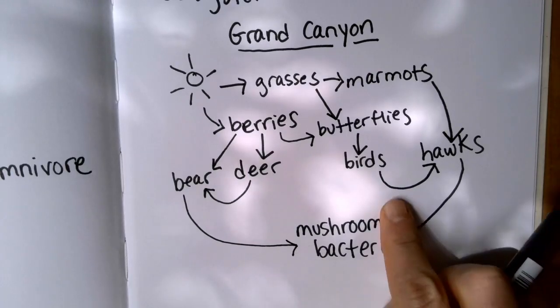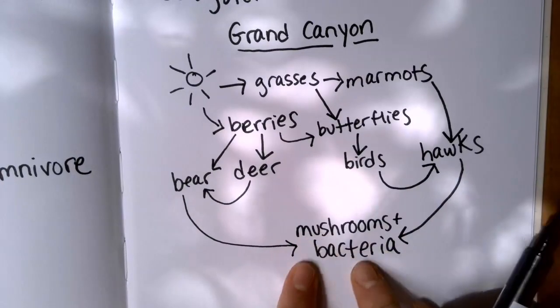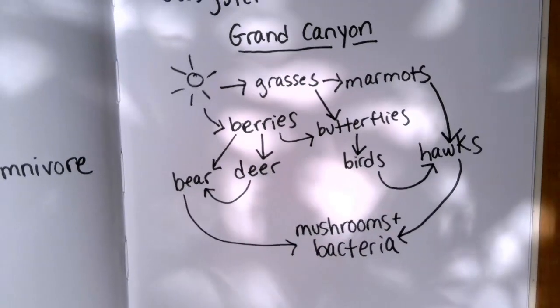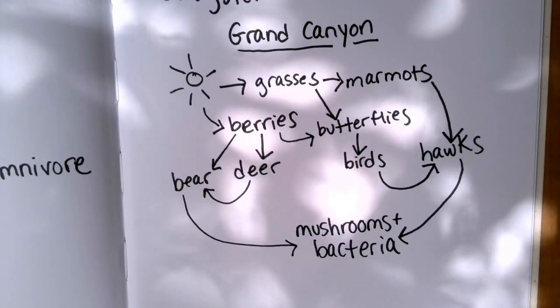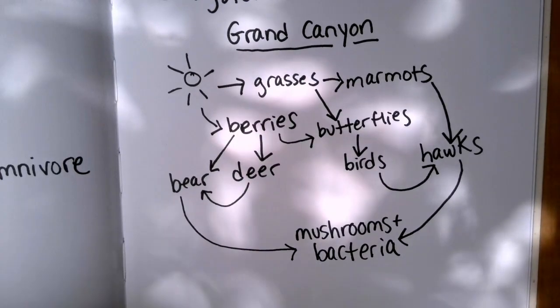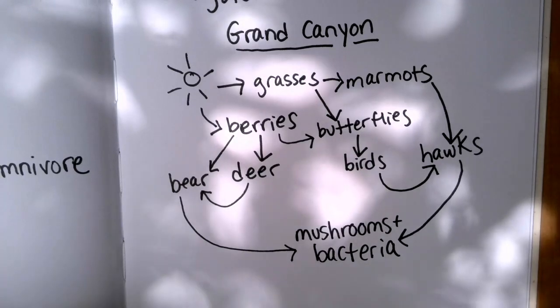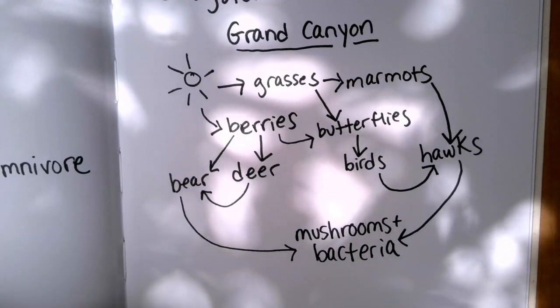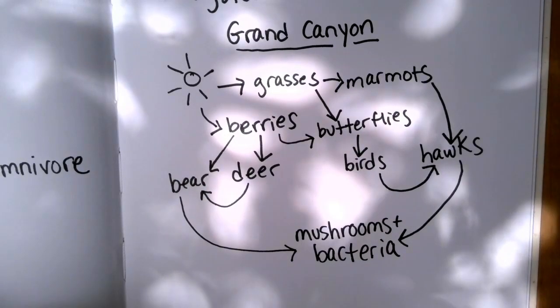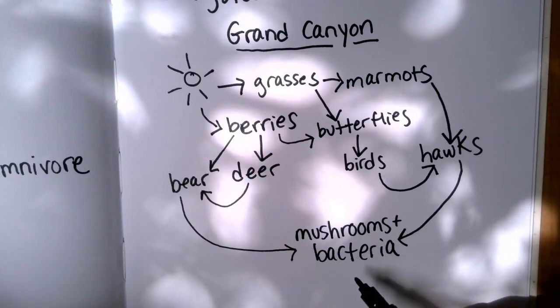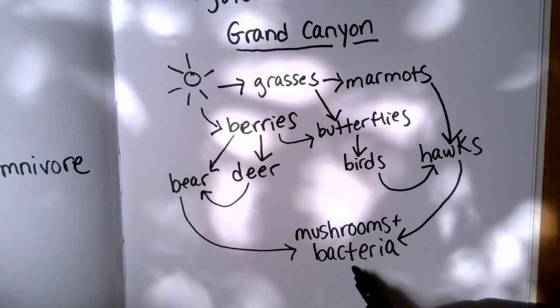All right, y'all. This is our food web. If you wanted a challenge or to add even more detail, and I'm going to say this is optional because if you Google food web, you won't usually see this on Google images. But if you wanted to show some more detail, you could show the nutrients from here, from our decomposers, going back to the grasses, going back to the berries.